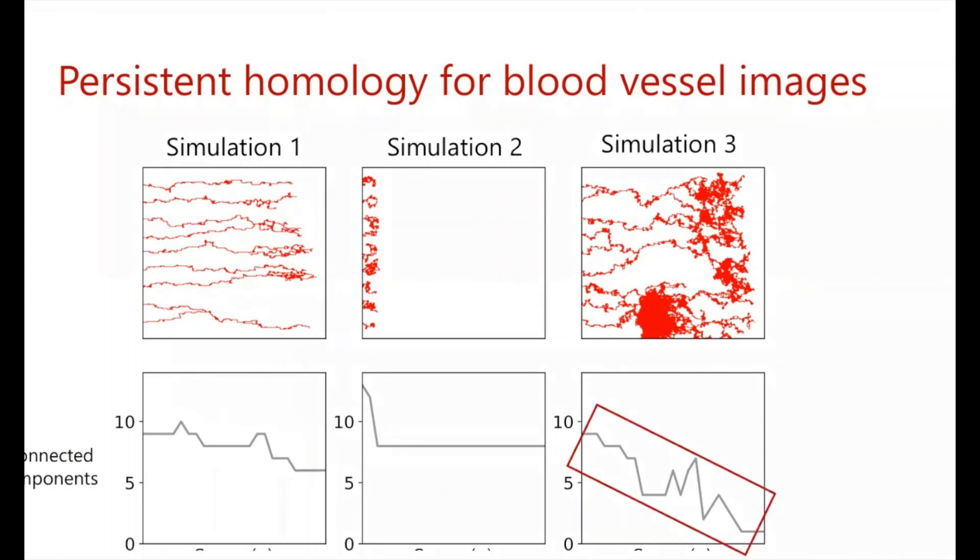And on the right, we have a very dense, highly connected network. And so here we see, as we move the line from left to right, we see a large degree of connectivity. And so the number of connected components really steadily decreases as we move from left to right. So here's just one way in which we can use persistent homology to characterize these three different simulations from each other.